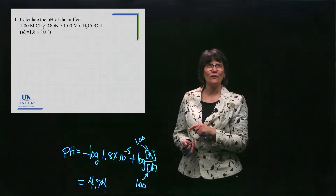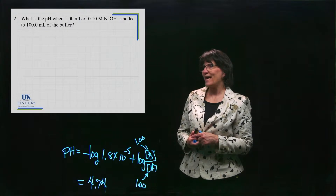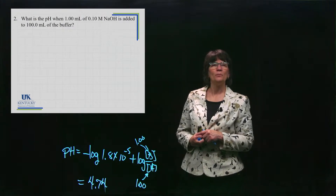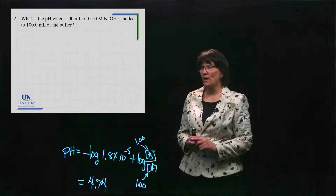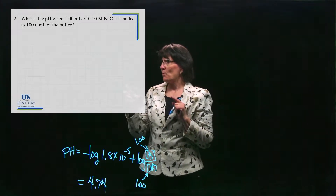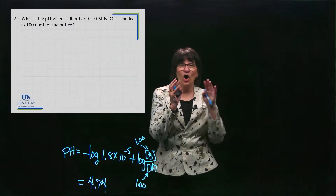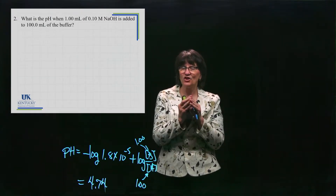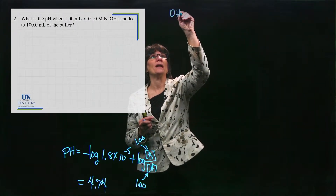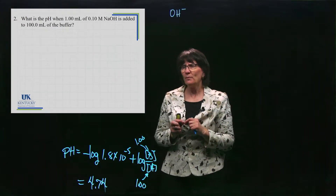Now we're going to add a base to this buffer and note how it resists change to pH. We're adding 1 milliliter of 0.1 molar sodium hydroxide to 100 milliliters of the buffer. We write the one-way reaction — we're adding sodium hydroxide, and from this moment forward in all our problems, when we run across a strong base we always want to write it just as OH⁻.